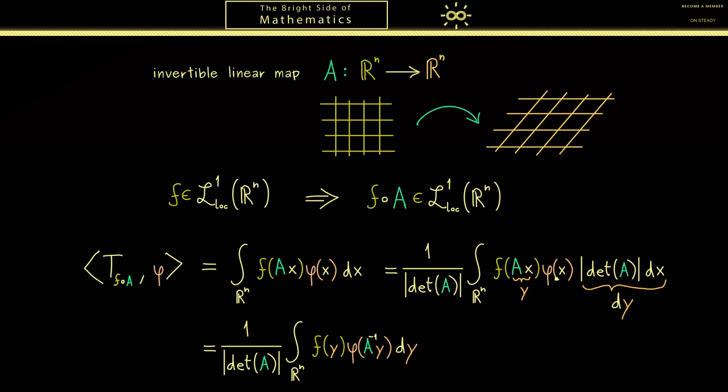However, please don't forget to substitute this x as well. With this we find in the integral f of y times phi of A inverse y. Now this result is very nice because we can rewrite the integral as the distribution Tf.